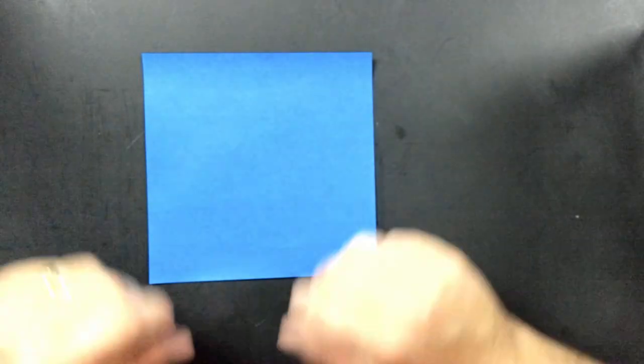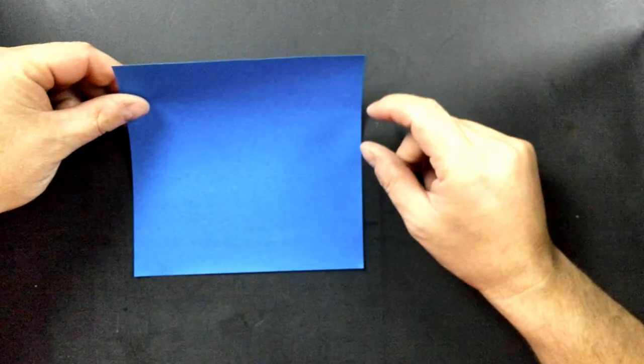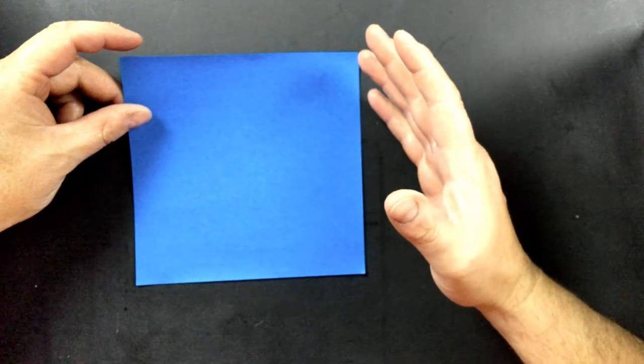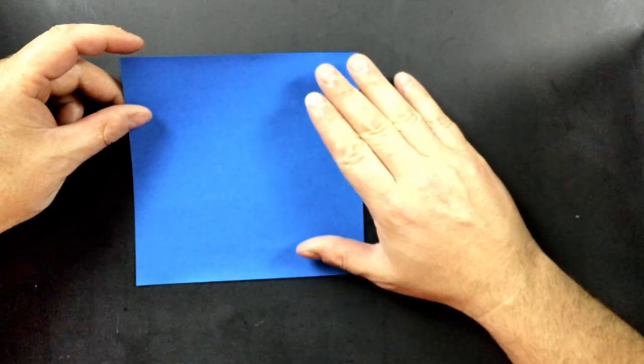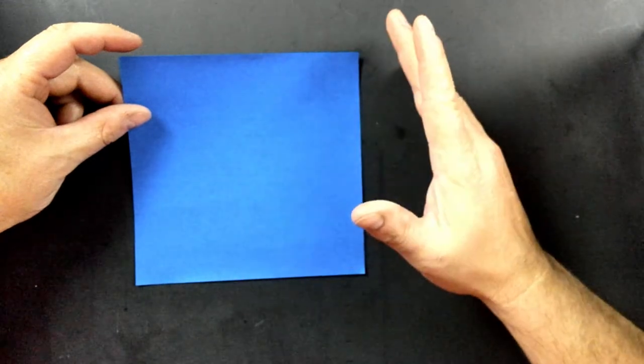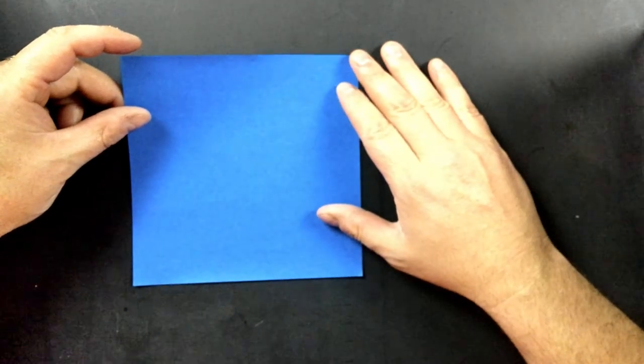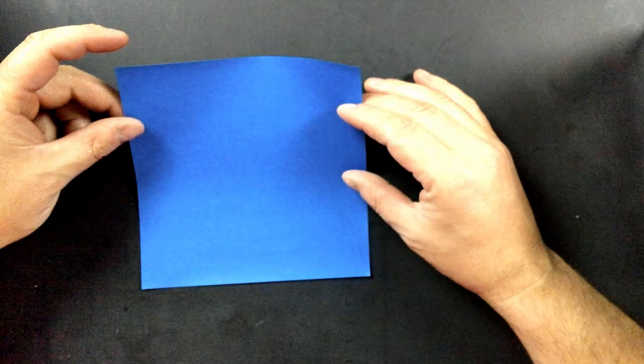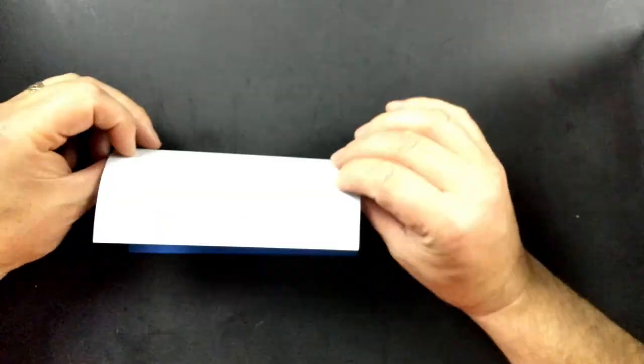I guarantee that you're going to enjoy creating this Scotty Dog because the folds are easy to do. Anyone at any level and any age can create this Scotty Dog. All you need is a square sheet of paper, and I have origami paper.